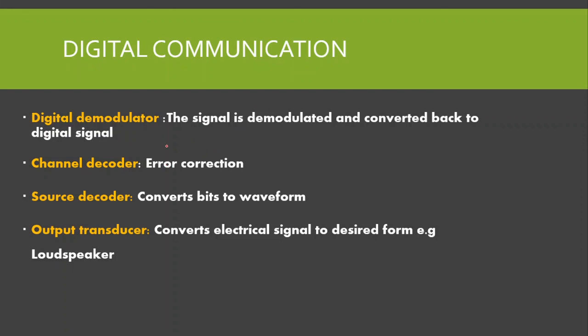The channel decoder performs error correction — it examines the redundant bits sent by the channel encoder to determine if there is an error in the signal. If there is no error, we are good to go. The source decoder converts bits to a waveform, and finally the output transducer converts the electrical signal to the desired form — for example, a loudspeaker.